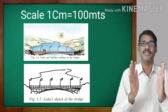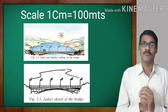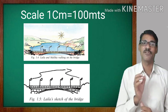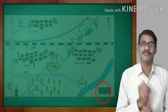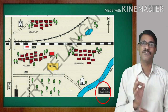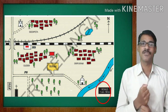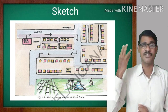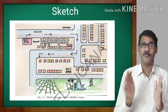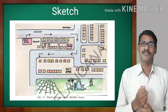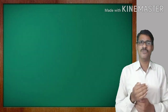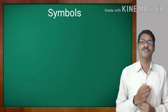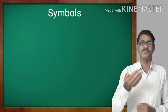We can understand distances easily with the scale. So for every map, we should provide the scale — scale is an important feature of a map. For a sketch map, there are no directions and no scale. But in a proper map, we have mentioned the directions and scale.